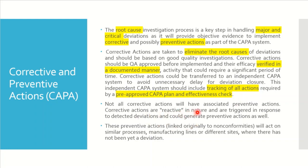It is not compulsory that you always have preventive actions alongside corrective actions. Sometimes your corrective actions and preventive actions will move together, and sometimes they will not. Corrective actions are reactive in nature — triggered in response to detected deviations — and could also generate preventive actions. We correct when we find that correction is required based on findings we call non-conformances or deviations.